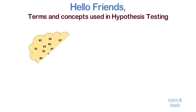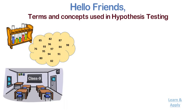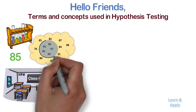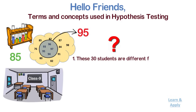Let us say that the average marks in science of class 9 students of ABC school are 85. On the other hand, if we randomly select 30 students and calculate their average score, their average comes to be 95. What can be concluded from this experiment? There are two conclusions. One, these 30 students are different from ABC school's class 9 students, hence their average score is different from the population.